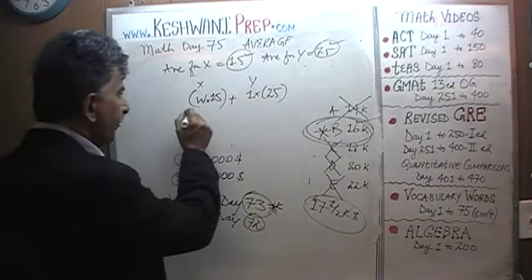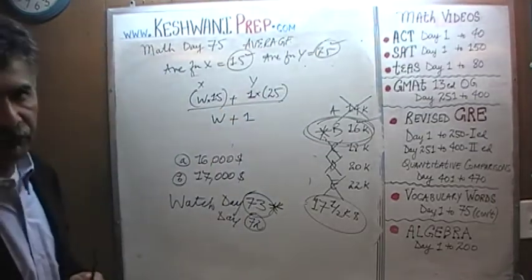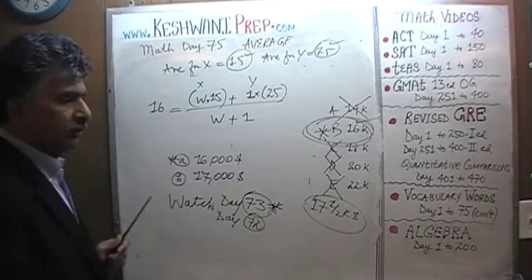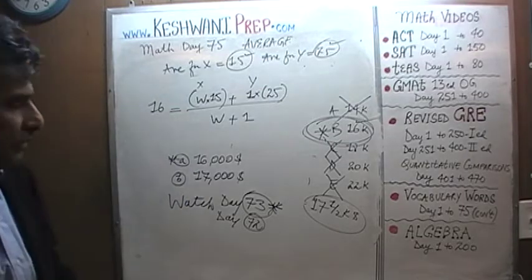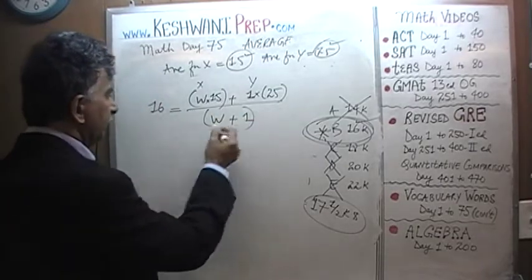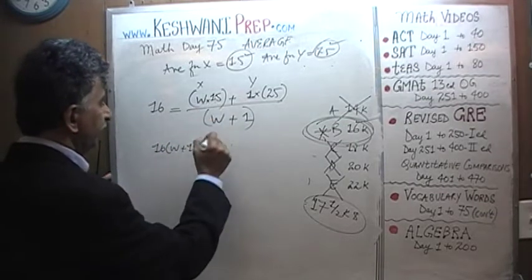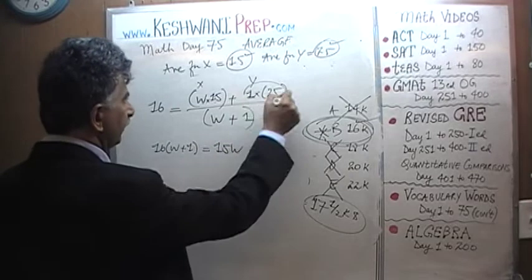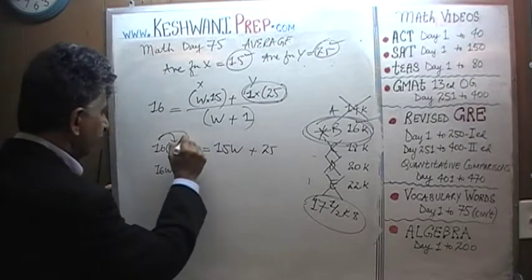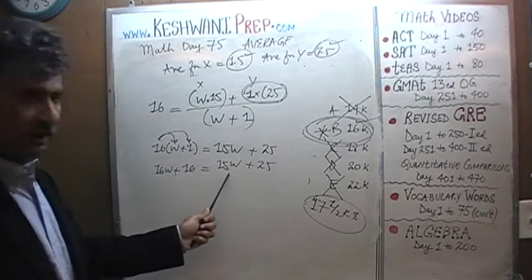So how many people do we have altogether? We have one person in department Y and W people in department X, and we are told the overall average needs to be $16,000. We're going to solve for $16,000 first and then $17,000. We have our equation; the rest is very simple. Cross-multiply both sides by W plus 1, and we end up with 16 times (W plus 1) equals 15W plus 25. Opening the parenthesis gives us 16W plus 16 equals 15W plus 25.